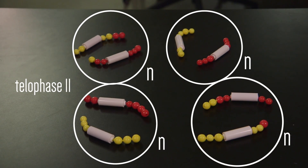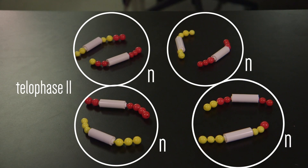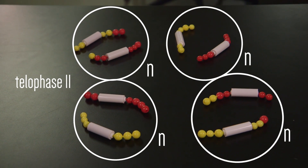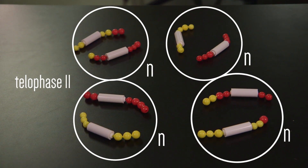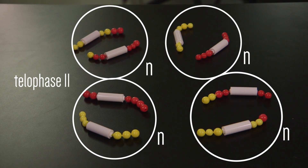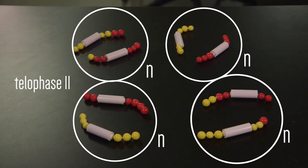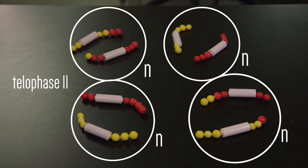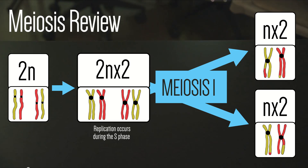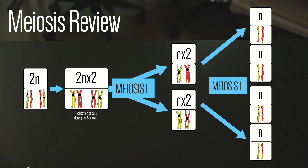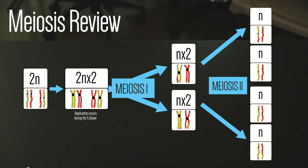Finally, each haploid gamete has one of each chromosome, for a total of two chromosomes in each cell. Each cell is unique because of crossing over that occurred in prophase 1. Here you can see the final products of meiosis. So to summarize: the first division of meiosis separates homologs — 2n diploid cells become n haploid cells. The second division separates chromatids; cells that were designated as times 2 now have single chromosomes.